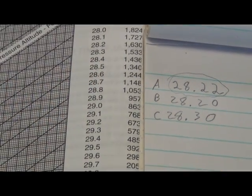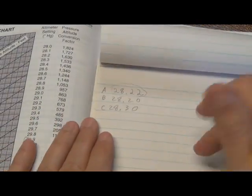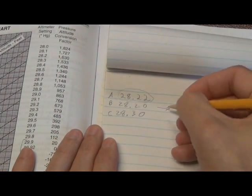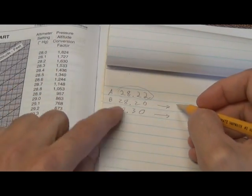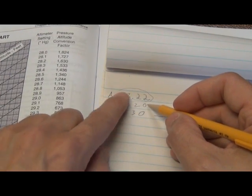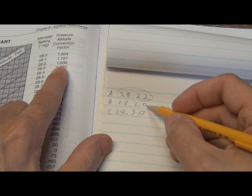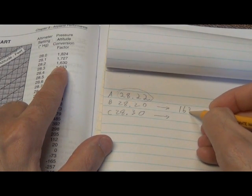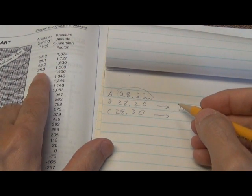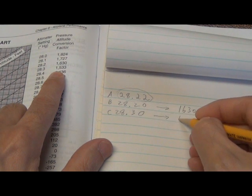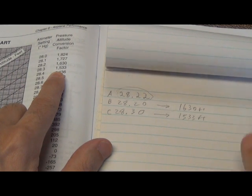The next thing you want to do, and I'm going to just focus now on the paper, the calculation paper. The next thing we want to do is we want to write down, I put an arrow like this and an arrow like this, and you want to write down what the conversion factors are for those two numbers that our number falls between. So for 28.2, the conversion factor is 1,630 feet. So you write, 1,630 feet. The conversion factor for 28.3 is 1,533 feet.